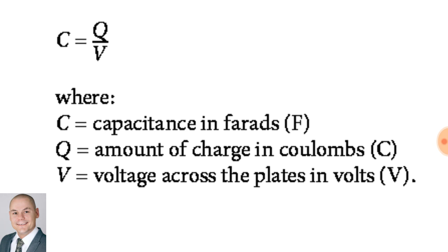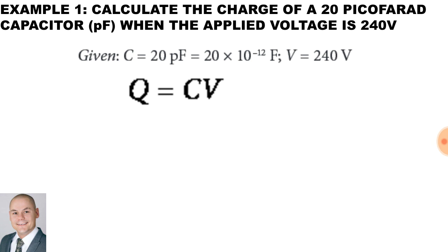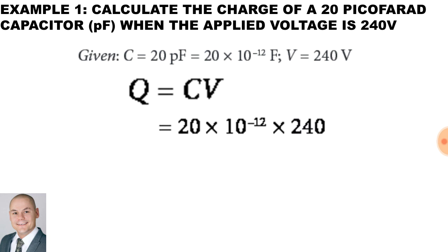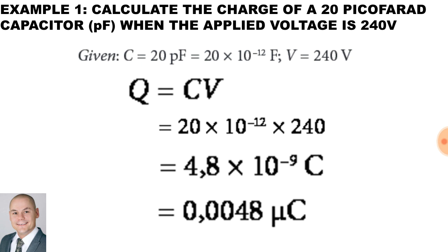Here we have a formula. To calculate the capacitance in farads, it will be the amount of charge in coulombs divided by the voltage across the plates. Our first calculation: calculate the charge of a 20 picofarad capacitor when the applied voltage is 240 volts. The unknown factor is charge, measured in coulombs. It will be the capacitance — 20 times 10 to the minus 12, as it's picofarad — multiplied by the voltage. Simplified, that gives us 0.0048 microcoulombs.